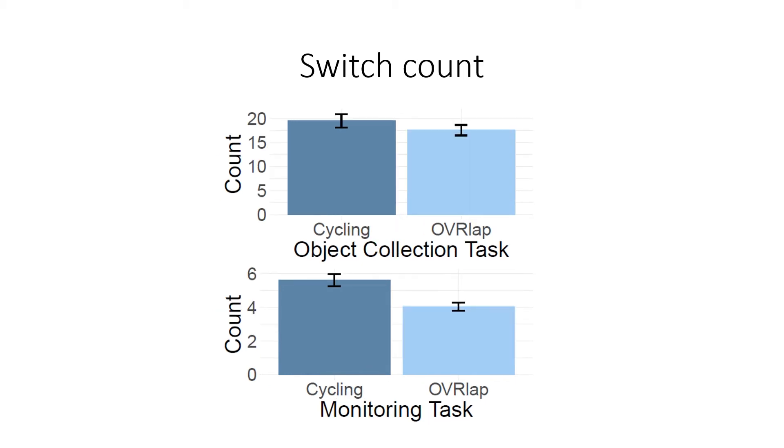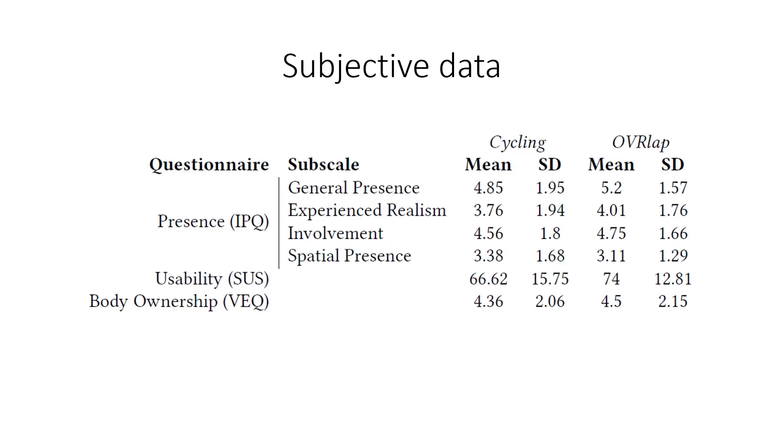For viewpoint switching, however, participants switched more times than they had to across all conditions. This suggests that the method for switching in our implementation of OVRlap, which was to manually press the joystick on a controller left or right to switch to another viewpoint in a predefined circular list, was not optimal. There was no significant difference in subjective responses across conditions.